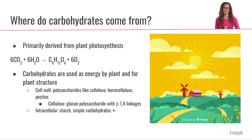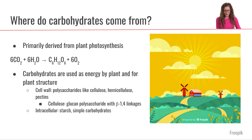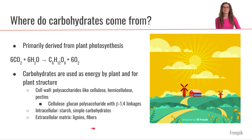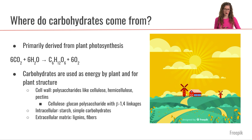The intracellular components of the plant — that is primarily where we're going to have some starch and simple carbohydrates — those are types of carbohydrates that we do have the enzymes to digest. The extracellular matrix of plants is where we're going to have some lignans and other types of fibers, which we do not have the enzymes to digest. That's where the diversity of carbohydrates comes from in our diet.